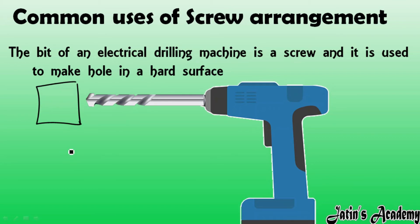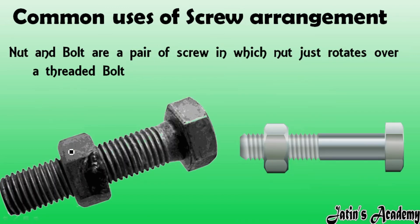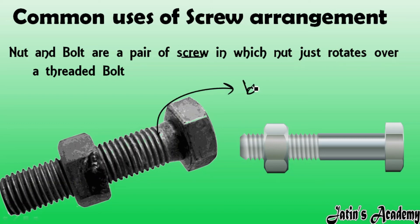Nut and bolt is also an example of a pair of screws, in which the nut rotates over the threaded bolt. This is the bolt, and this is the nut. Whenever you want to move the nut onto the bolt, you apply force and the nut rotates over the threaded bolt.